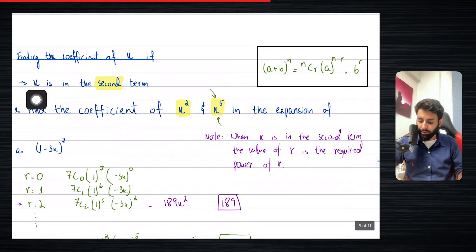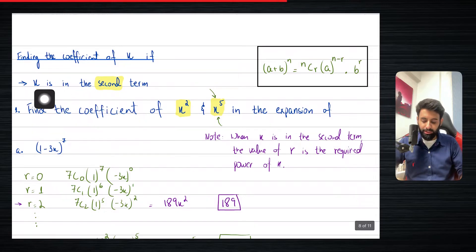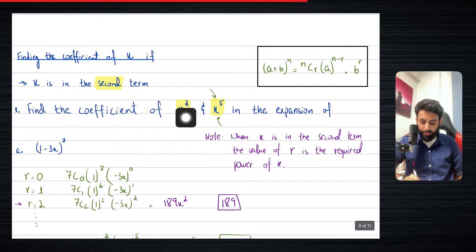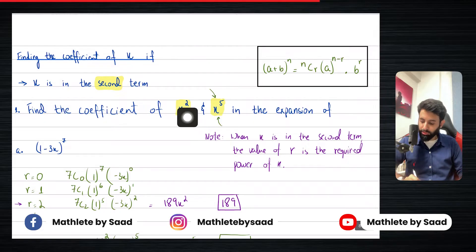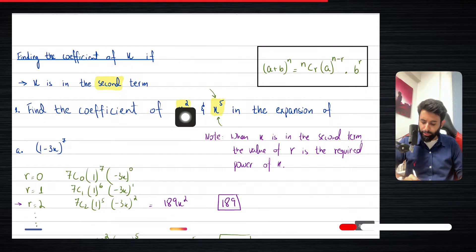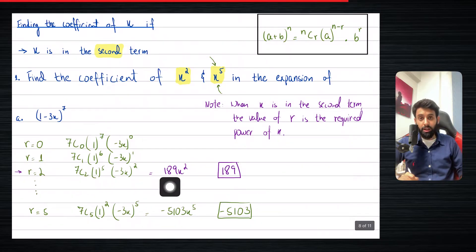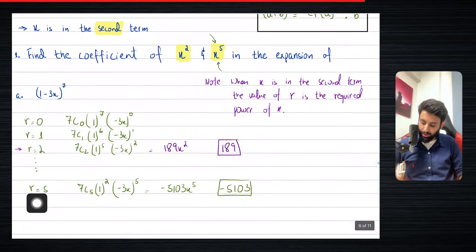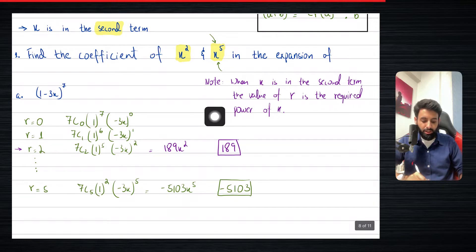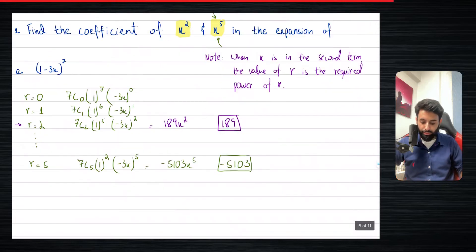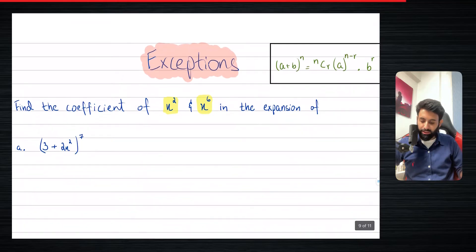Now, what if it's in the second term? Notice how over here it says x is in the second term — there's a reason why I'm emphasizing on this so much, you'll find out in a minute. So in this case, it was even simpler. All you had to do was look for the required power of x. So if the required power of x is two, in other words if you want the coefficient of x squared, you take r as two and plug it in the formula. Or if you want the coefficient of x power five, you plug in r equals five. So when x is in the second term, the value of r is the required power of x. Now, what about the exceptions?